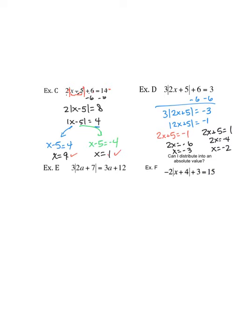Okay. Now, if we plug it back in, ladies and gentlemen, if we plug negative 3 back in here, 2 times negative 3 is negative 6 plus 5 is negative 1. The absolute value would be 1. 3 times 1 is 3 plus 6 is 9. 9 does not equal 3. This is not a solution.